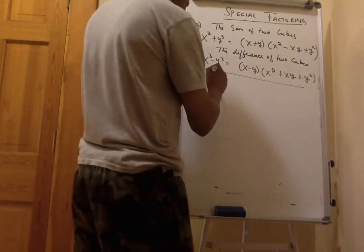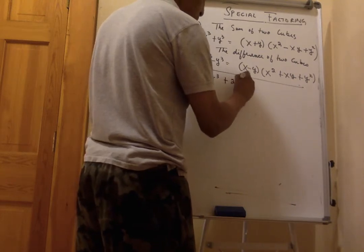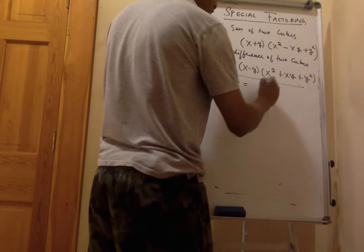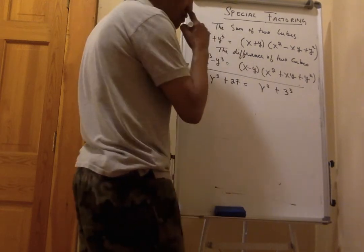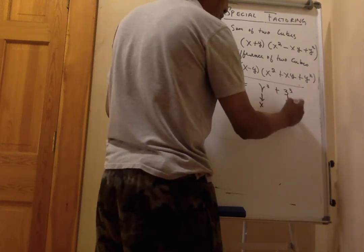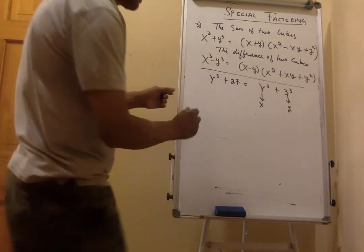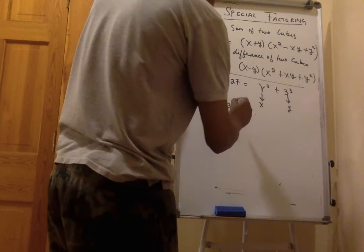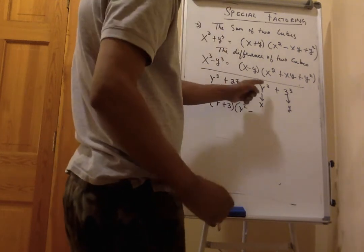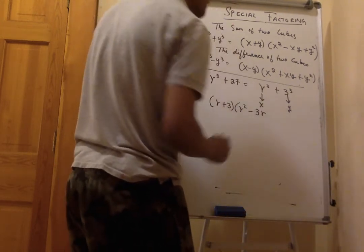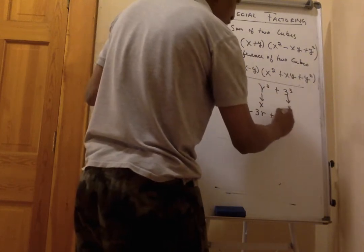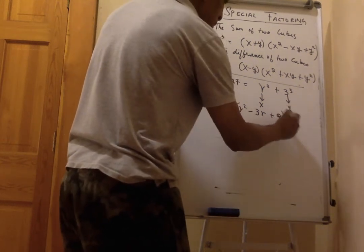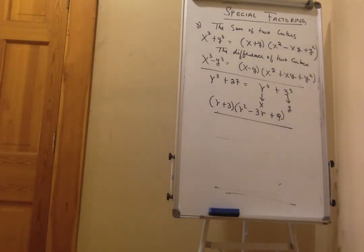Let's do r cubed plus 27. Rewrite as r cubed plus 3 cubed, so x = r and y = 3. Plugging into the sum of cubes formula: (r + 3)(r squared minus 3r plus 9).